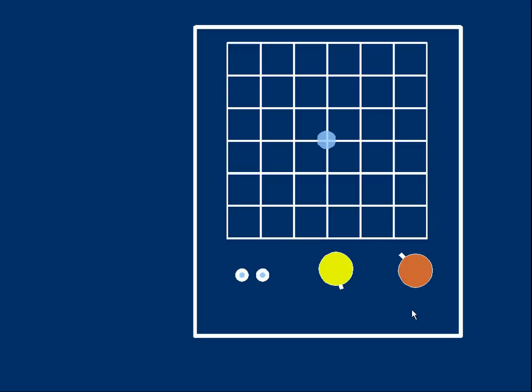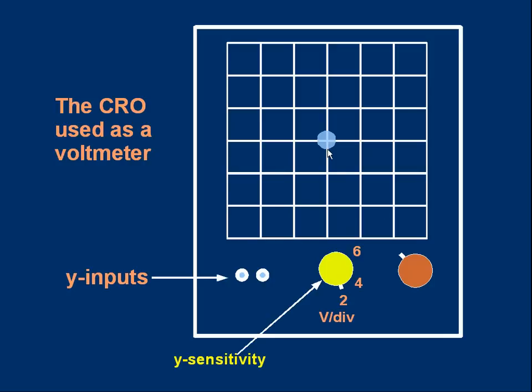So here's a simplified oscilloscope. The grid is the screen. When the thing's on, there'll be a bright spot showing in the middle of the screen. And I've shown that as a blue blodge. Let's see how we can use this device to measure voltage first of all. Now, these two little circles on the bottom left are our inputs. I'm calling them Y inputs for a reason. If we apply a voltage between these two inputs, the spot on the screen will move up or down, like on the Y axis of a graph. So we call them the Y inputs.